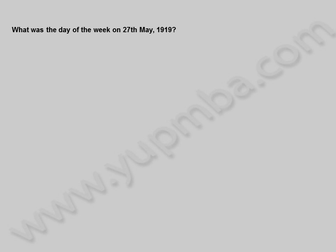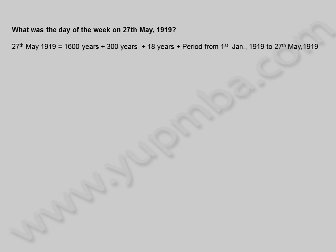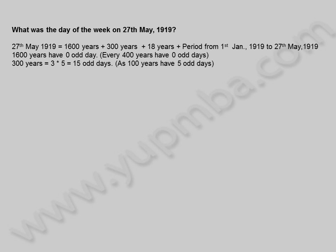What was the day of the week on 27th May 1919? 27th May 1919 is equal to 1600 years plus 300 years plus 18 years plus the period from 1st January 1919 to 27th May 1919. 1600 years have 0 odd days — every 400 years have 0 odd days. 300 years equals 3 into 5 equals 15 odd days, as 100 years have 5 odd days. This equals 14 plus 1 equals 1 odd day, since 7 odd days equals 1 week equals 0 odd days.